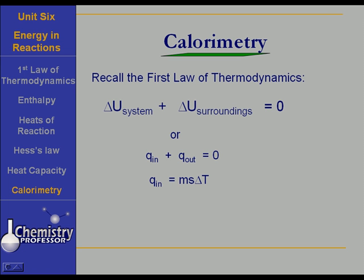Q is equal to msΔT — maybe you learned it as Q equals mcΔT, same difference. Q, the heat in, is equal to the mass times the specific heat times the change in temperature. Therefore, the mass times the specific heat times the change in temperature into the system plus the mass times the specific heat times the change in temperature out of the system has got to equal zero.